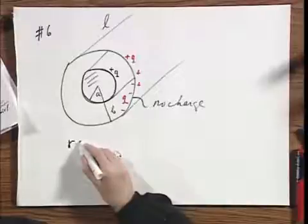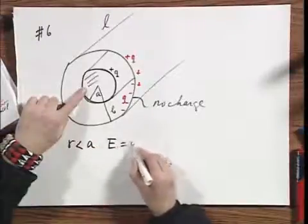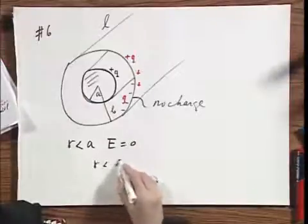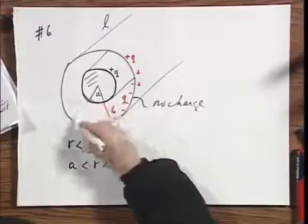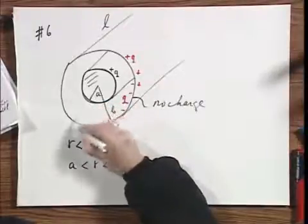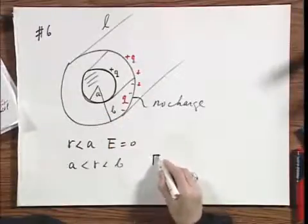Well, R less than A inside this metal, E is zero. That is easy.